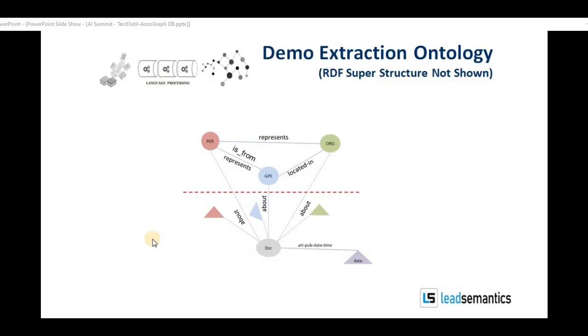We will now show a short demo of TextDistil extracting triples from plain text documents, using a simple extraction ontology with few concepts and relations shown here. The RDF superstructure is not shown here to reduce visual clutter. Concepts person, location, organization, work of art, and predicates located in, is from, represents, and about are going to be used.